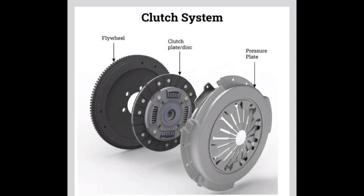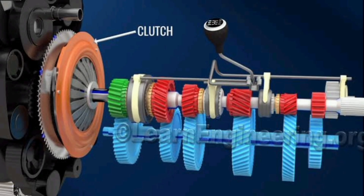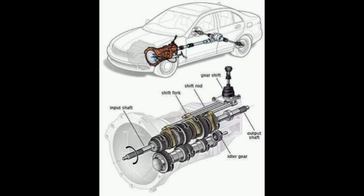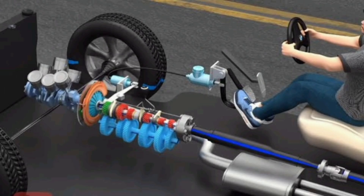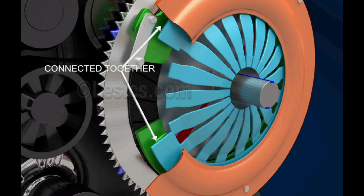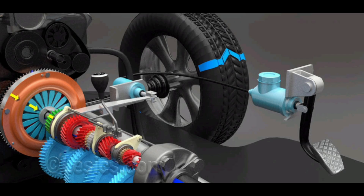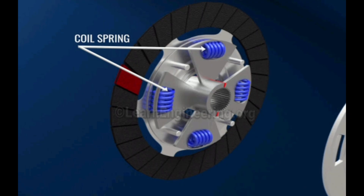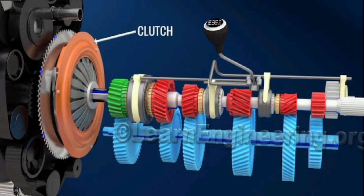The clutch is vital in allowing the engine to remain disconnected from the rear wheels when required. It enables the transfer of rotational motion from the crankshaft to the road wheels only when prompted by the driver. Operating on the principle of friction, the clutch ensures gradual engagement, facilitating a smooth start for the vehicle.